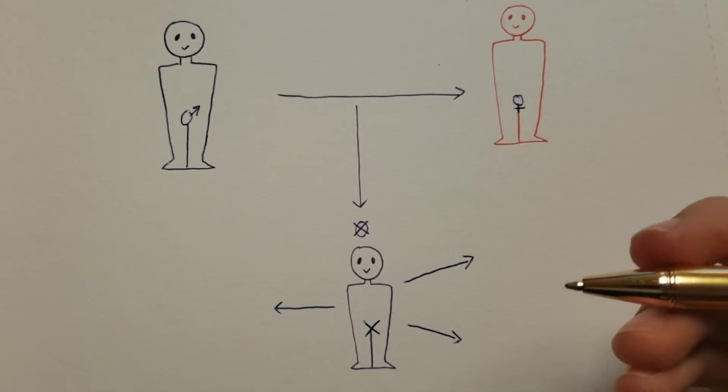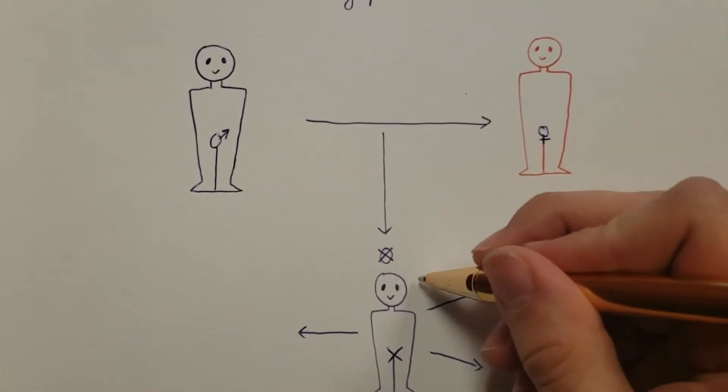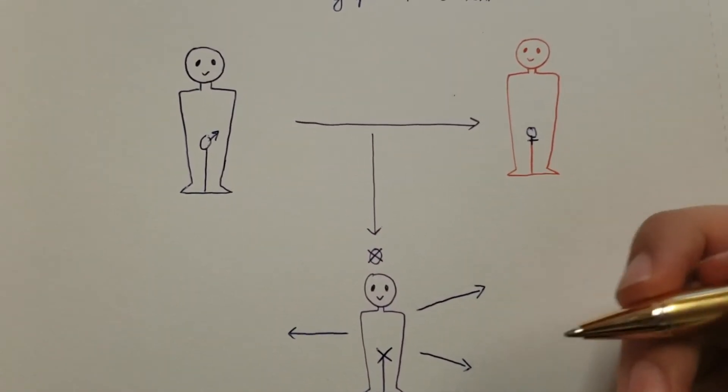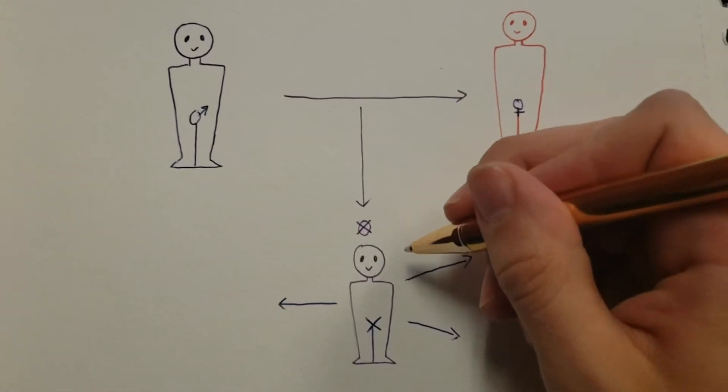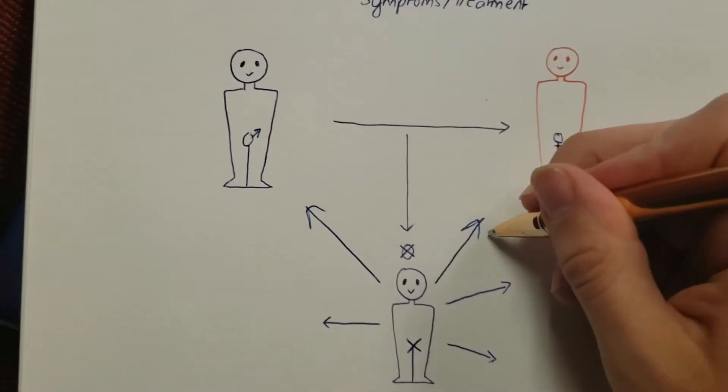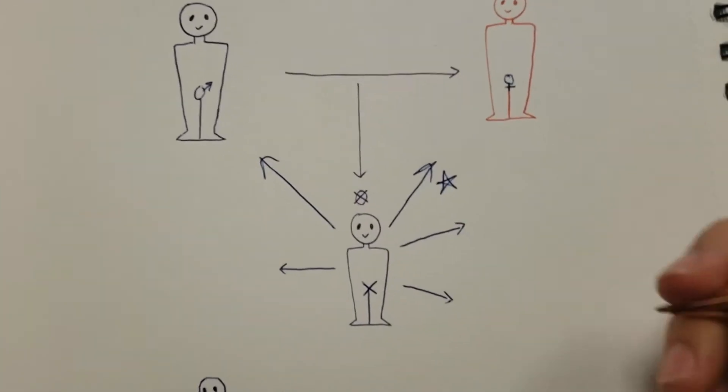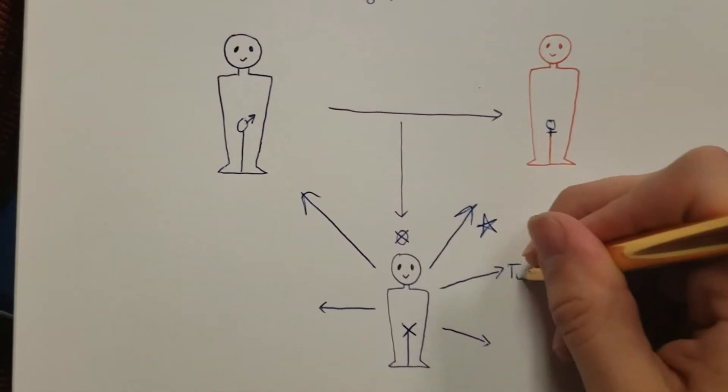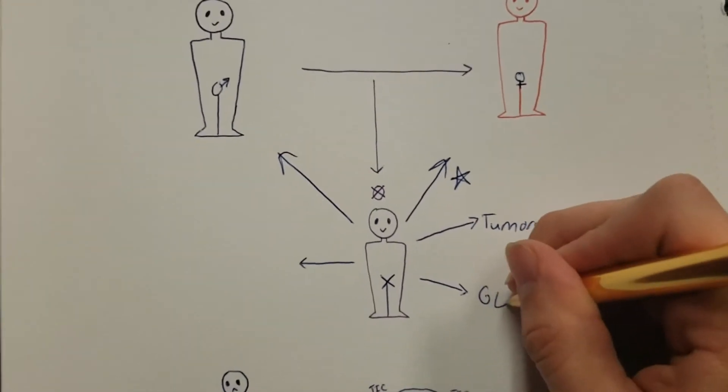Individuals of this phenotype often undergo surgery such as gonadectomies, genitoplasty, or clitoral reduction to more closely identify as one sex or another, more typically the female sex. If they do not do this they do run the risk of gonadoblastoma, otherwise known as GB, or other types of tumors.